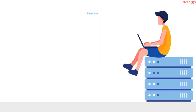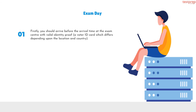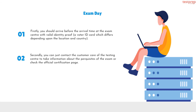Exam day. After crossing all the hurdles, comes your exam day — all your hard work is going to take shape. In order to receive your result, remember the following points: first, you should arrive before the arrival time at the exam center with valid identity proof, such as a voter ID card, which differs depending upon the location and country; second, contact the customer care of the testing center for information about prerequisites, or check the official certification page; third, you will be given a locker where you can keep your belongings at the test center.